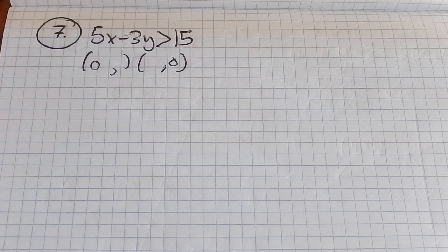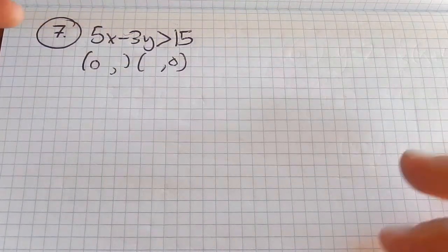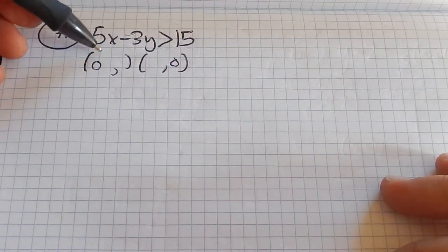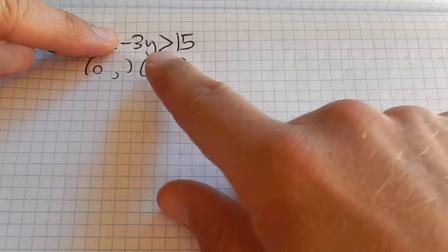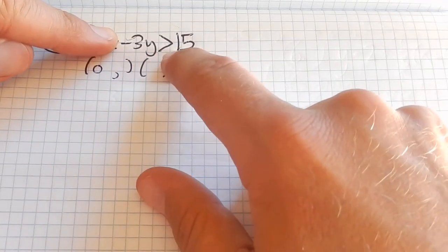You could solve it for y. That would be okay, it's a little more work I think. So what I'm going to do is say if x is 0, plug in 0 for x. 5 times 0 is 0. So notice what I'm left with is negative 3y compared to 15. I want it equal to it.